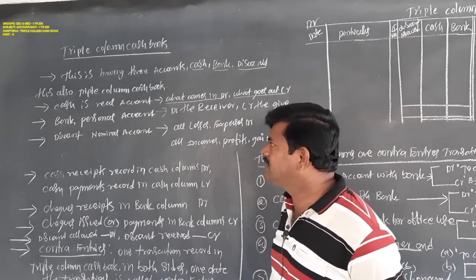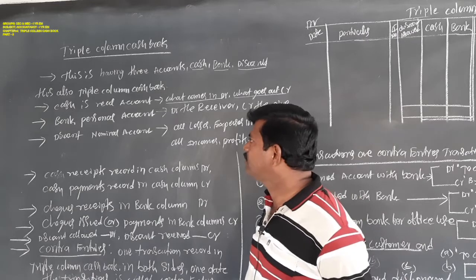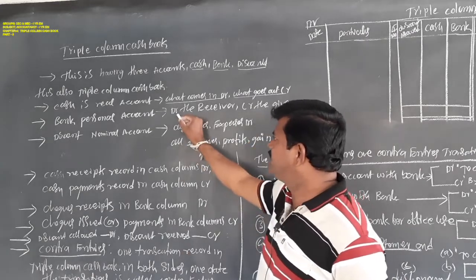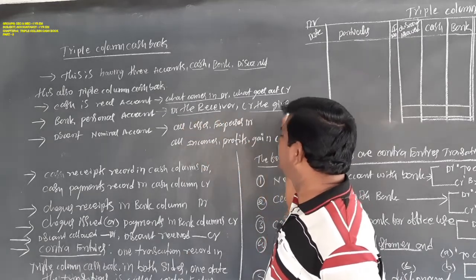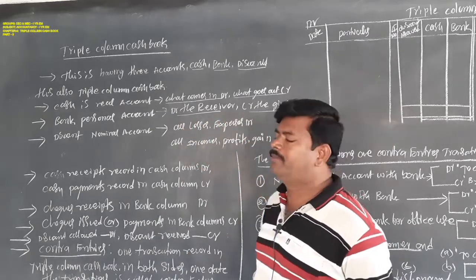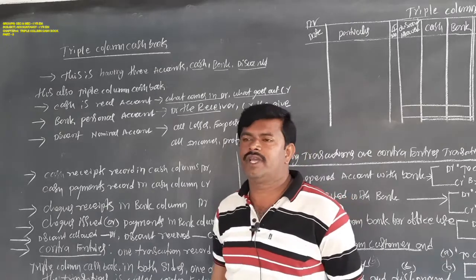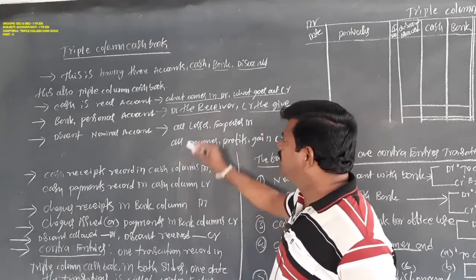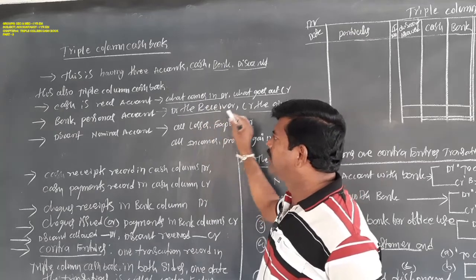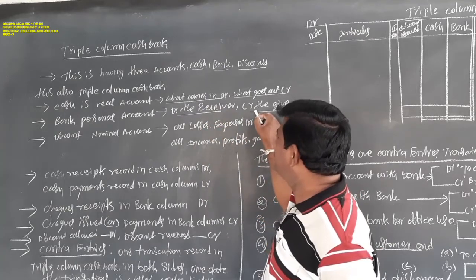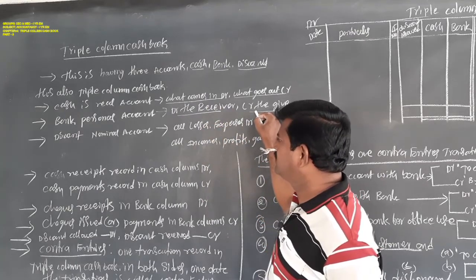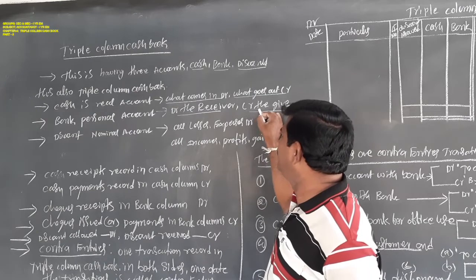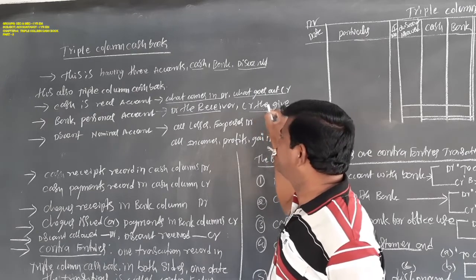Bank is a personal account. So debit the receiver, credit the giver. When bank is receiving cash, it must be debited. When bank is giving cash, or payment made by cheque, whatever it may be, it is the credit side.